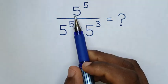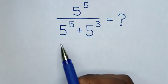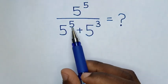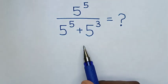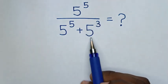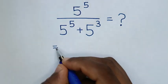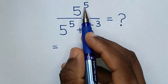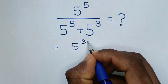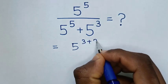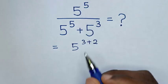Hello. How to solve 5 power of 5 over 5 power of 5 plus 5 power of 3. So first we make 5 power of 3 common. Then it will be equal to 5 power of 5, which is the same as 5 power of 3 plus 2, because power of 3 plus 2 is power of 5.